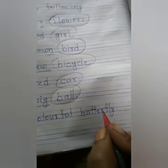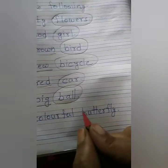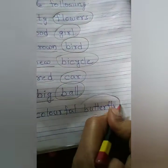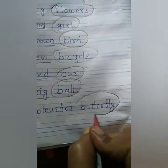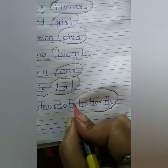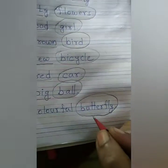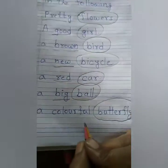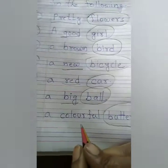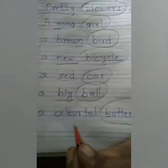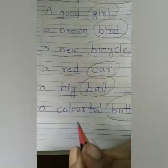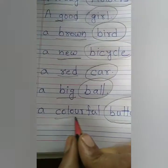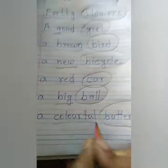A colorful butterfly. We are talking about butterfly, so we will circle 'butterfly'. And how is the butterfly? It is colorful. So what will we do with 'colorful'? Underline it.